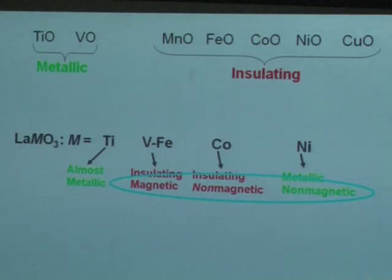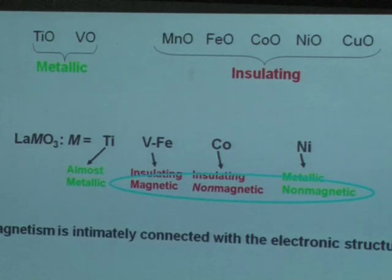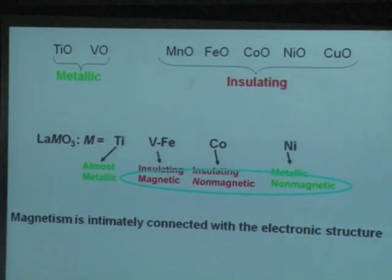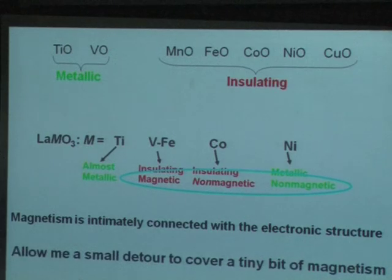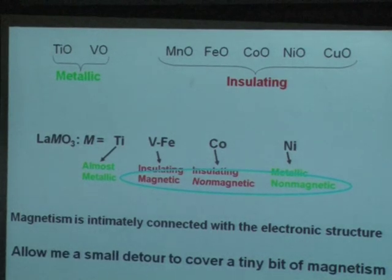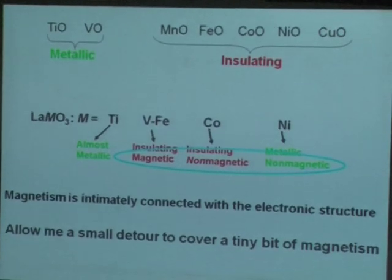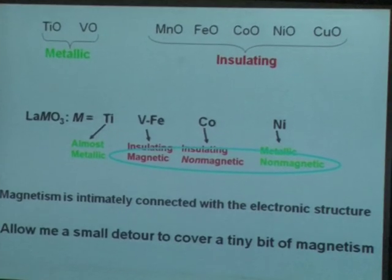And this immediately begs for an explanation, because this is very counterintuitive. And this is, when we understand, we'll say that, okay, we've understood how to understand the transition metal oxygen. Magnetism is intimately connected with the electronic structure, so I'll take a slight detour, because I'll not talk about too much of magnetism. But let me show a few questions and a way of broadly thinking about magnetism quickly before I turn to the electronic structure.